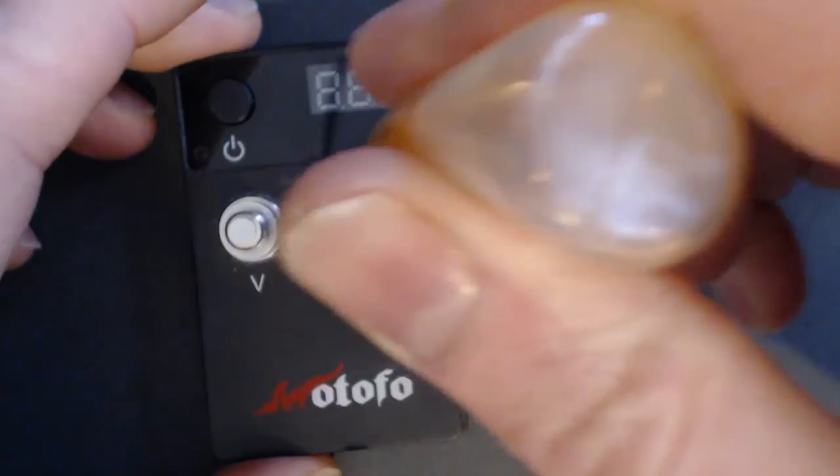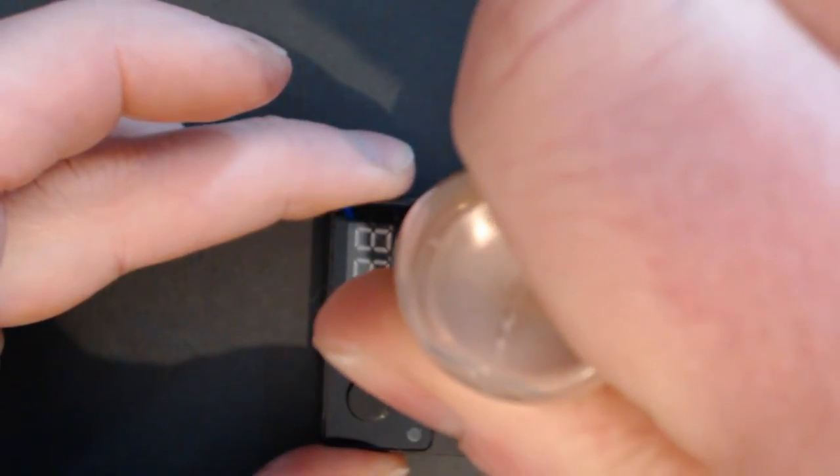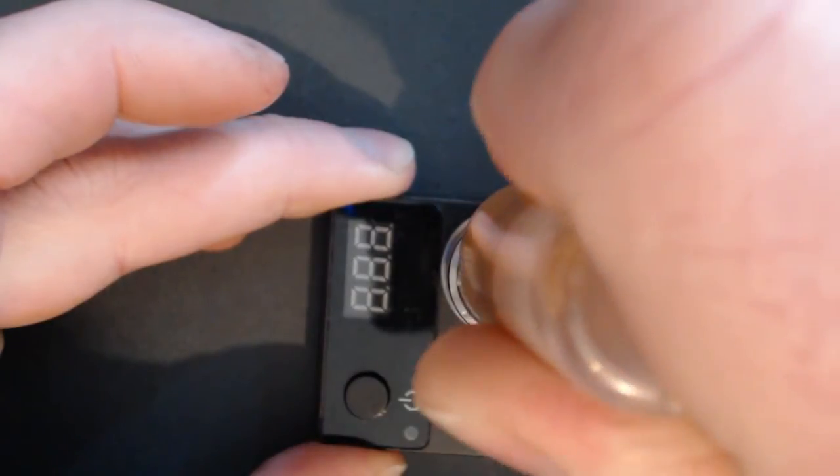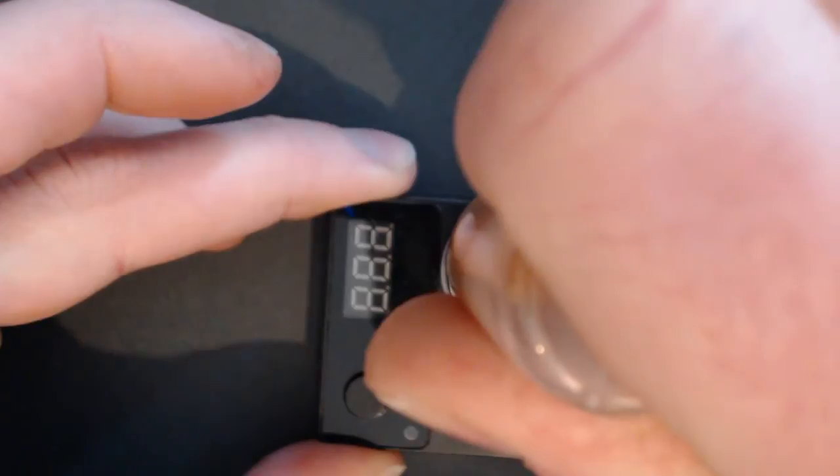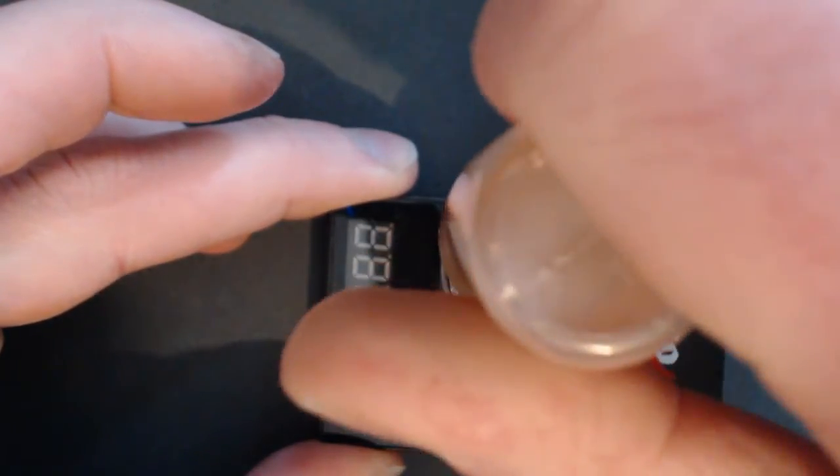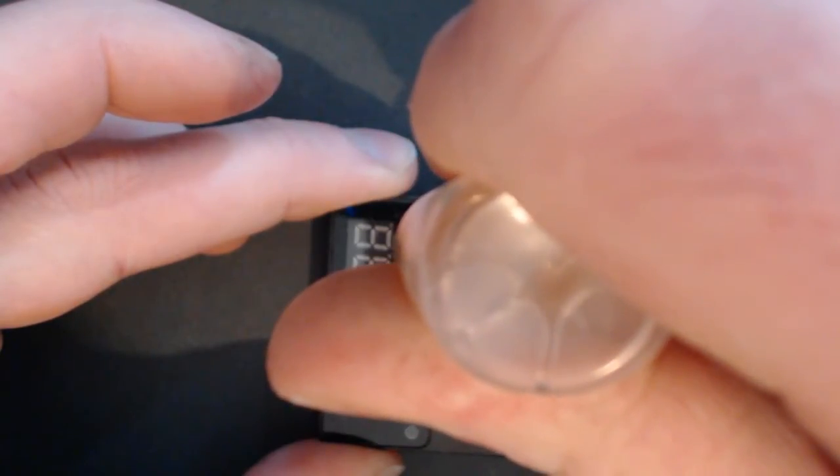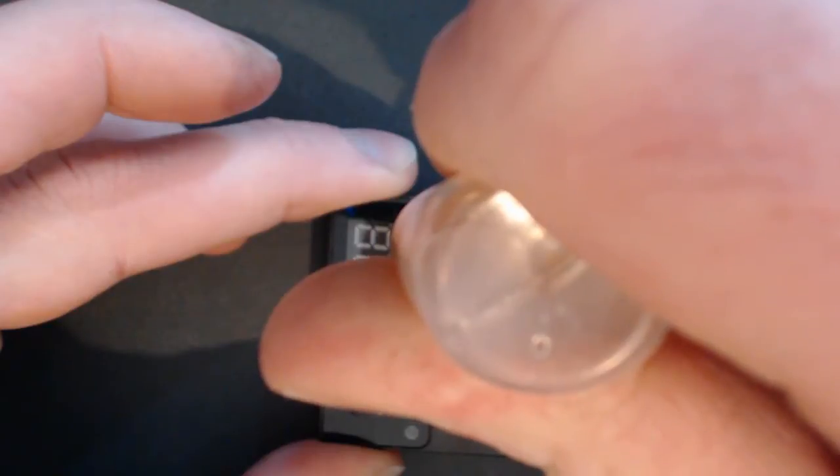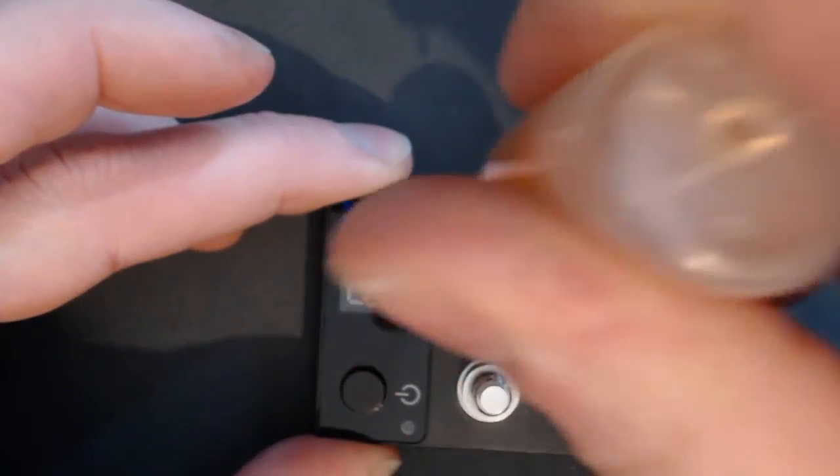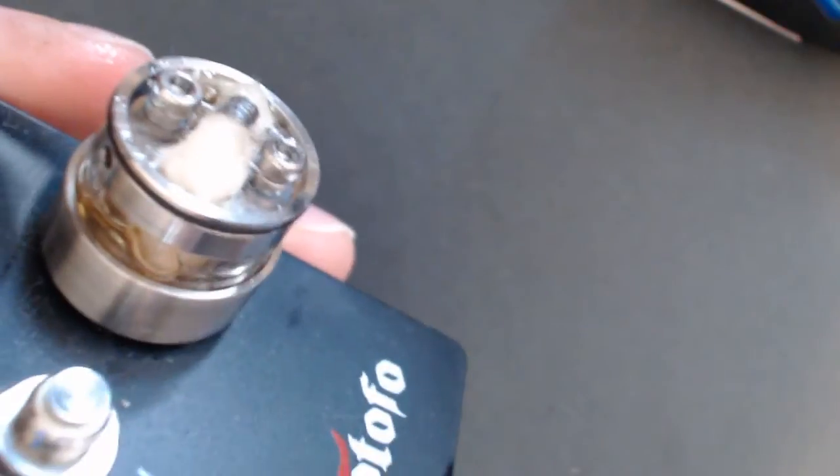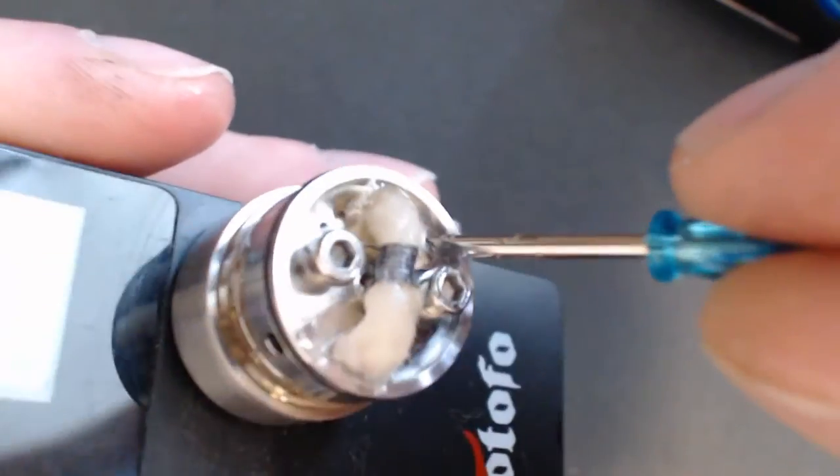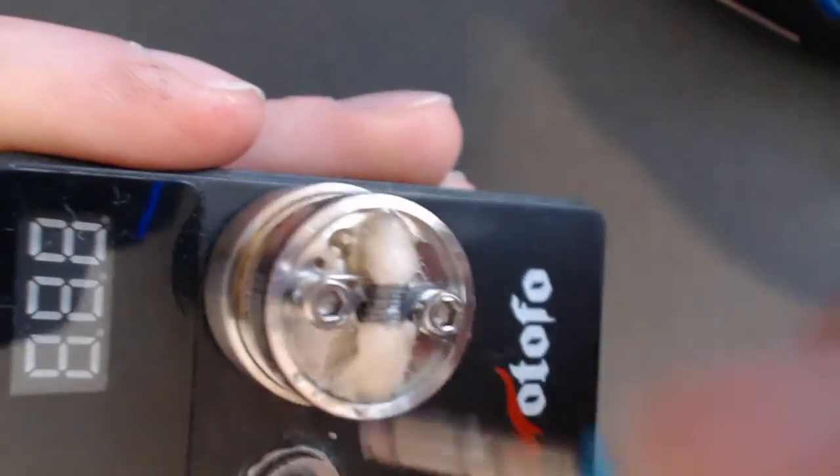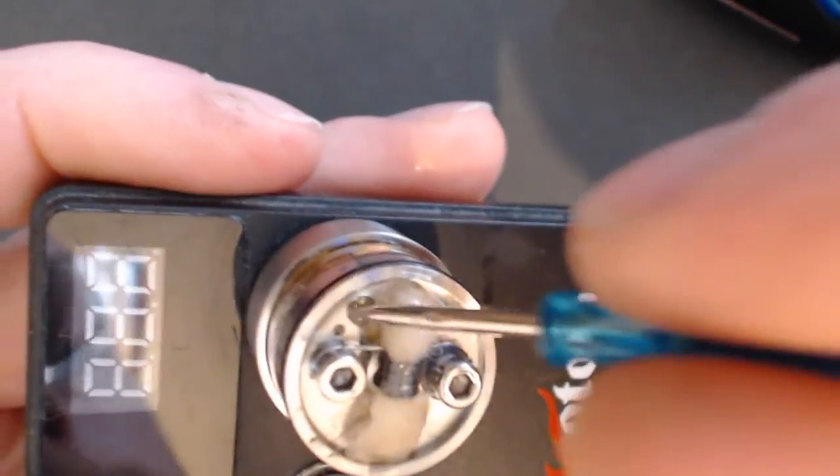So we'll just prime it up a little bit more and then we'll just fill up the rest of the tank via the fill hole. Okay, it's just starting to come out the fill hole.